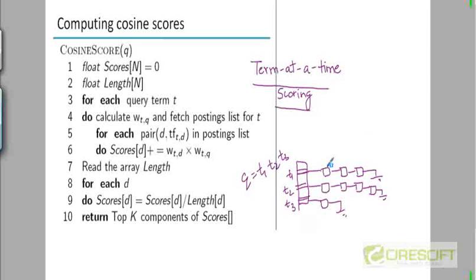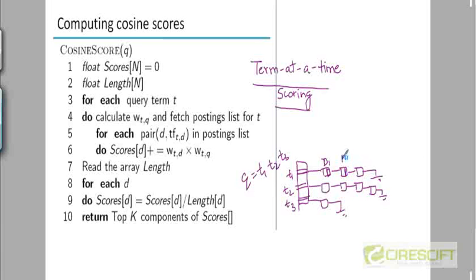What we store along with the postings — bear in mind we are talking about non-positional indexes here, so we are not storing a list of positions. We store the doc ID and also the term frequency. So if this is doc ID d1, along with the doc ID value we store the term frequency of t1 in document d1, similarly for d2 and d3.